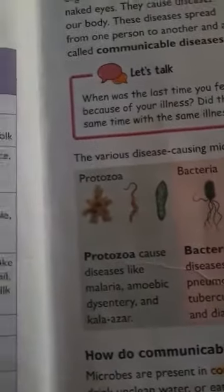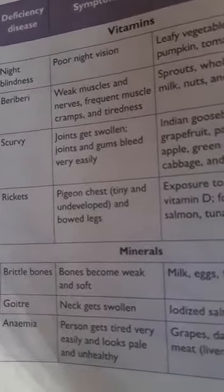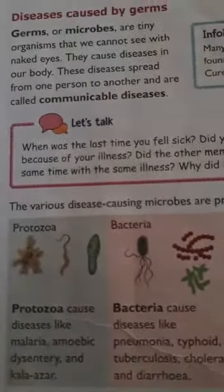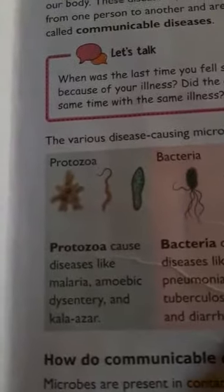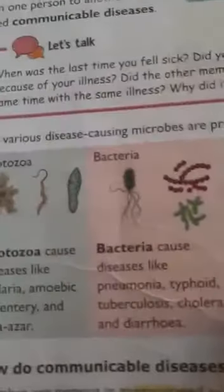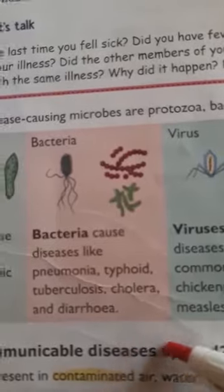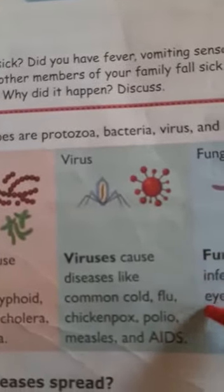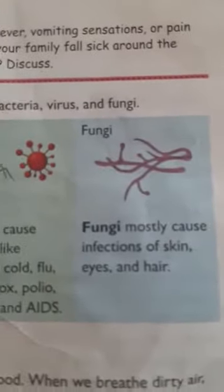Deficiency diseases are not communicable. Communicable diseases are caused by germs and can spread from person to person. Protozoa cause diseases like malaria, amoebic dysentery, and kala-azar. Bacteria cause diseases like pneumonia, typhoid, tuberculosis, cholera, and diarrhea. Viruses cause diseases like common cold, flu, chicken pox, polio, measles, and AIDS. Fungi cause some skin infections.